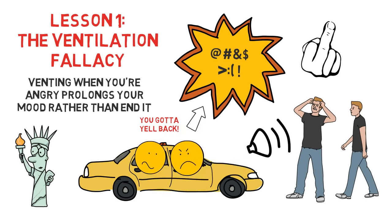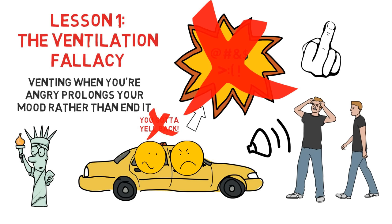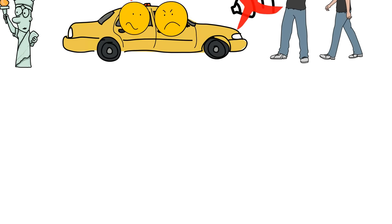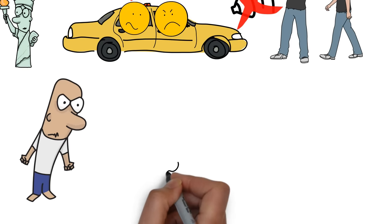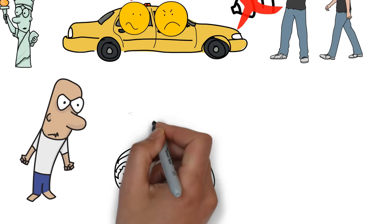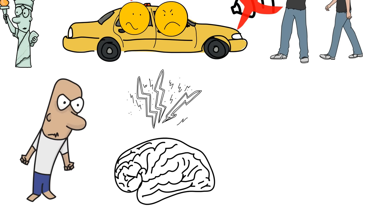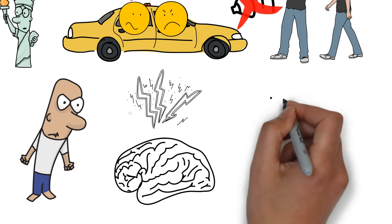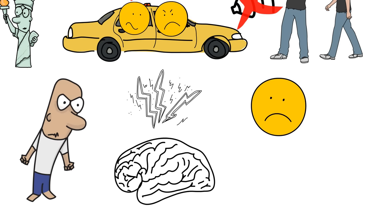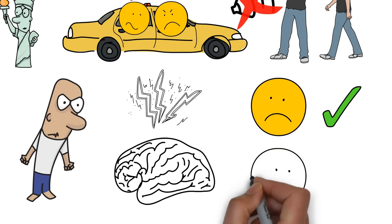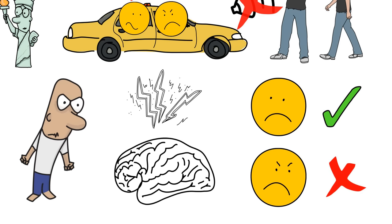Contrary to popular belief, Goleman, along with findings from multiple studies, argues that venting your anger doesn't make you feel better, but instead prolongs and amplifies your anger. It pumps up the emotional brain's arousal and leaves people feeling more angry. Don't get confused though. Venting when you're sad can be a great way to get your feelings validated, but isn't as effective when you're angry. So when you feel yourself becoming angry, what can you do to control your anger?